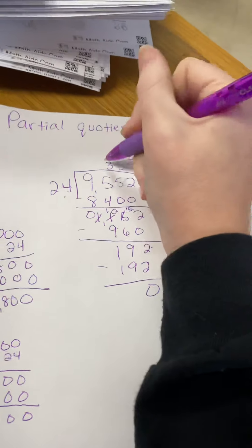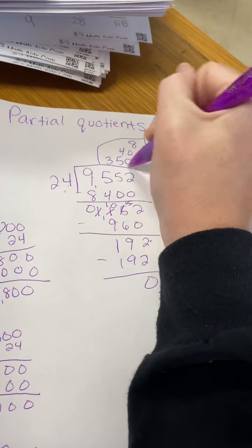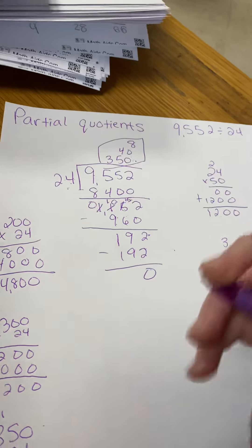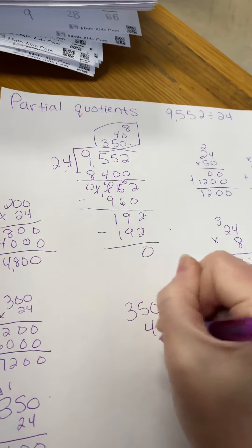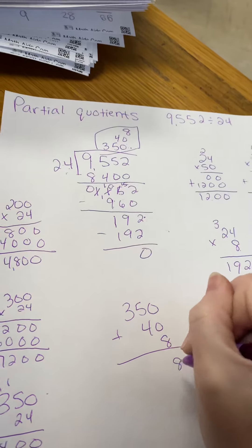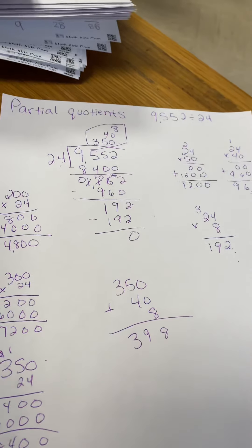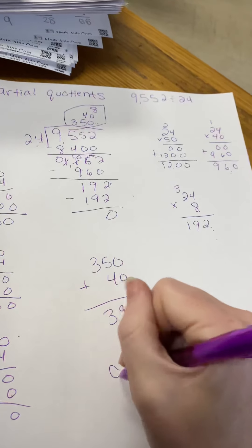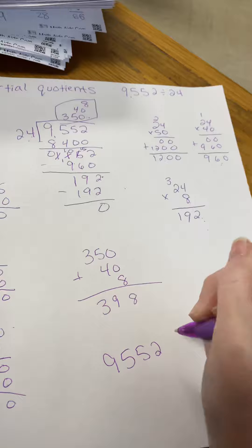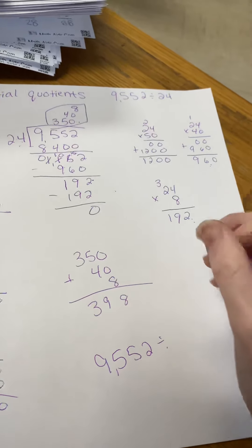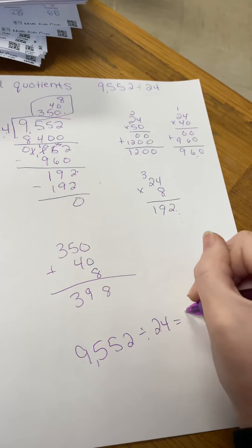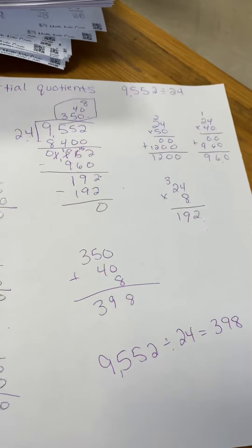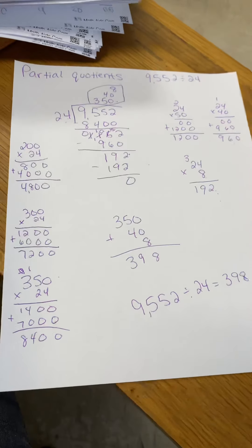At the top, we have 350, 40, and 8. These are all called your partial quotients. You take your partial quotients and add them together. That gives you 398. So 9,552 divided by 24 equals 398 is your quotient. And that's how you do partial quotients.